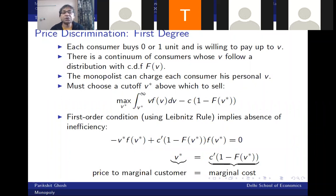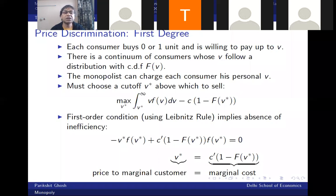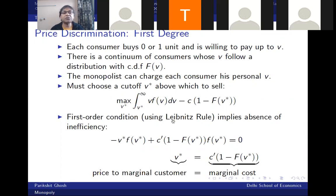Because consumer surplus is zero, producer surplus becomes synonymous with social surplus. So whatever maximizes profits also maximizes social surplus — the quantity that maximizes social surplus also maximizes the monopolist's profits under perfect price discrimination. There's no wedge between the two. Under simple single-price monopoly, some consumer surplus was left on the table, causing divergence between social surplus and profits — giving rise to monopoly inefficiency.